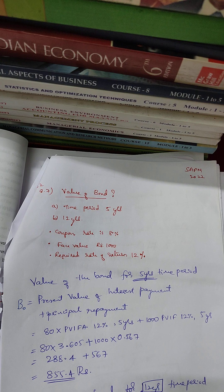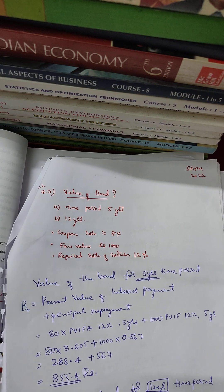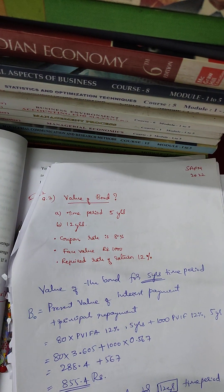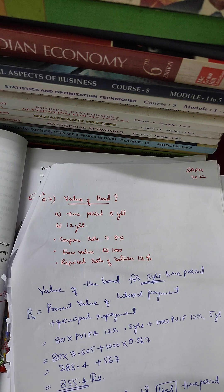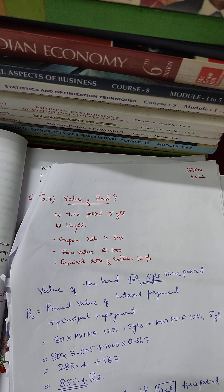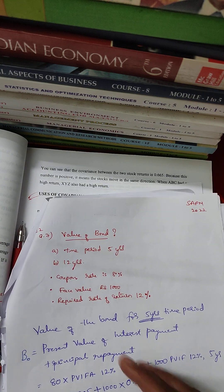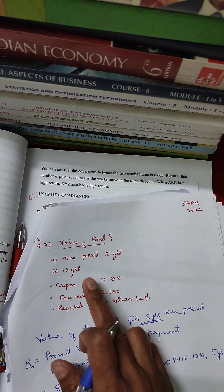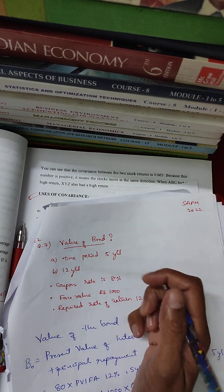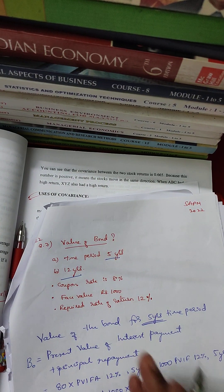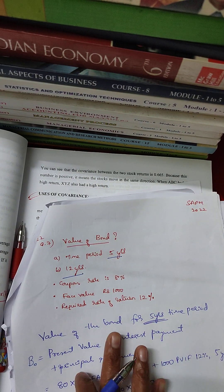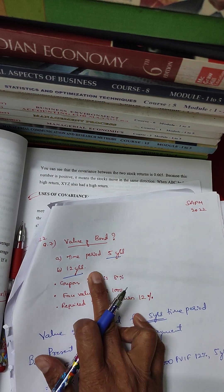We will find the value of the bond and the intrinsic value of the bond. The formula is very simple. Be with me, try with me, and it will be very easy. The question is: find out the value of the bond. Time period: 5 years and 12 years, face value 1,000 rupees.